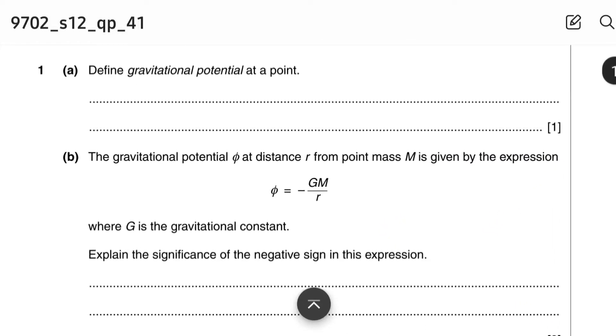Okay, so the second question that we are going to do is from June 2012 Paper 41, Part A: Define gravitational potential at a point. Make sure to memorize the definition because getting marks in this part is like getting free marks.